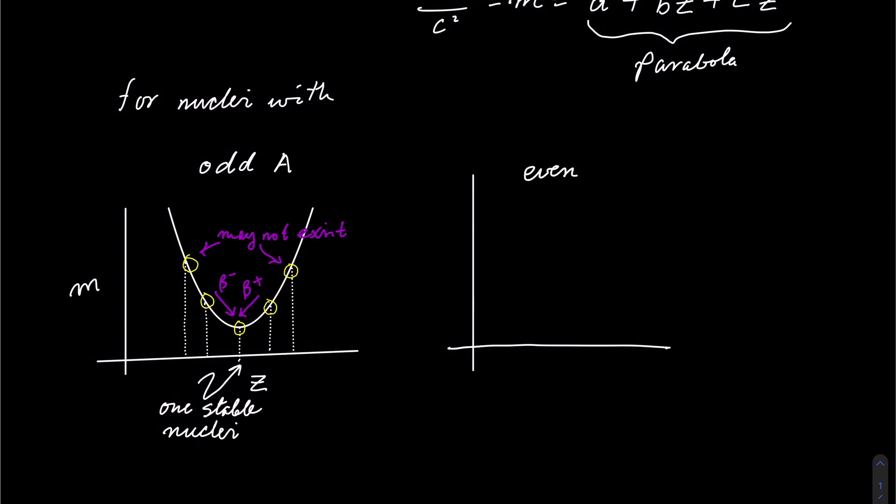And for even nuclei, you get two plots. The top one is for odd-odd nuclei, and the bottom one is for even-even nuclei. And again, you get a number of radioactive decays for the unstable nuclei that can go to more stable form through radioactivity.